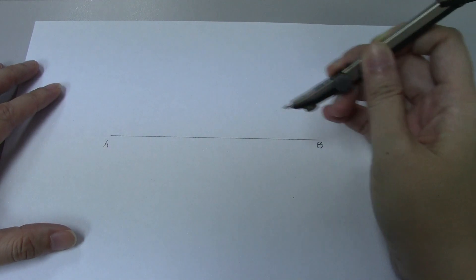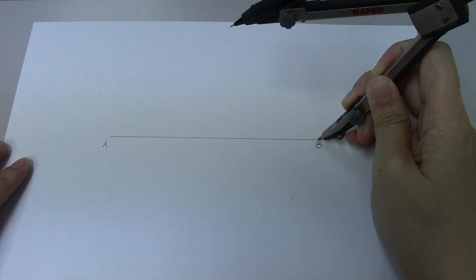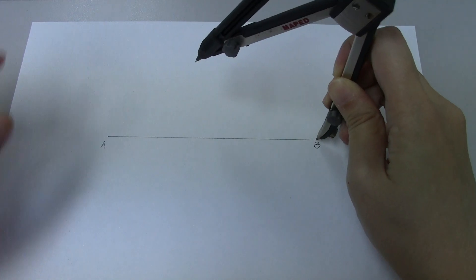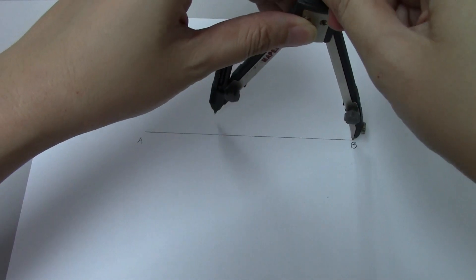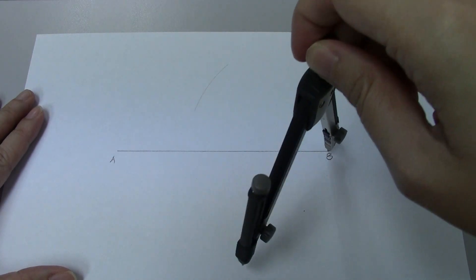So step number two, we're going to place the needle point of the compass at point B. And we're going to draw an upper arc, followed by a lower arc.